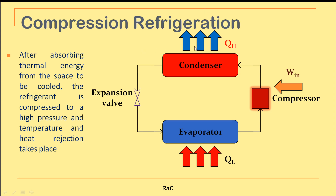The compressed refrigerant at very high temperature and pressure is given to the condenser where heat rejection takes place with the help of external fluid circulation. Heat is absorbed in the evaporator and rejected in the condenser. Then the pressure and temperature are reduced using the expansion valve and the refrigerant is given back to the evaporator for heat absorption again.